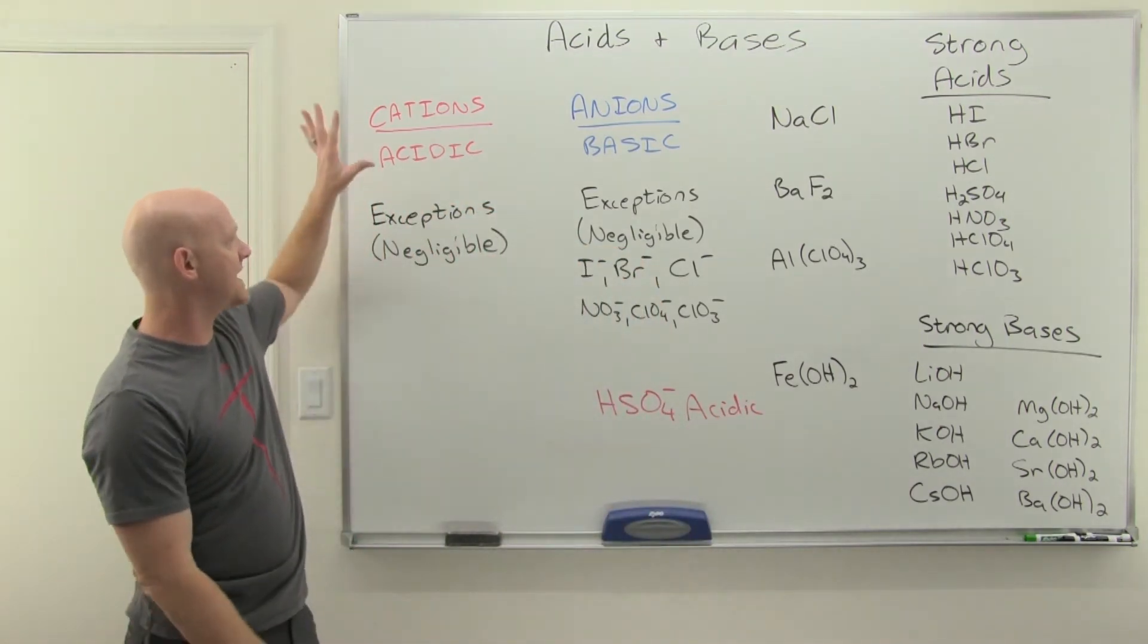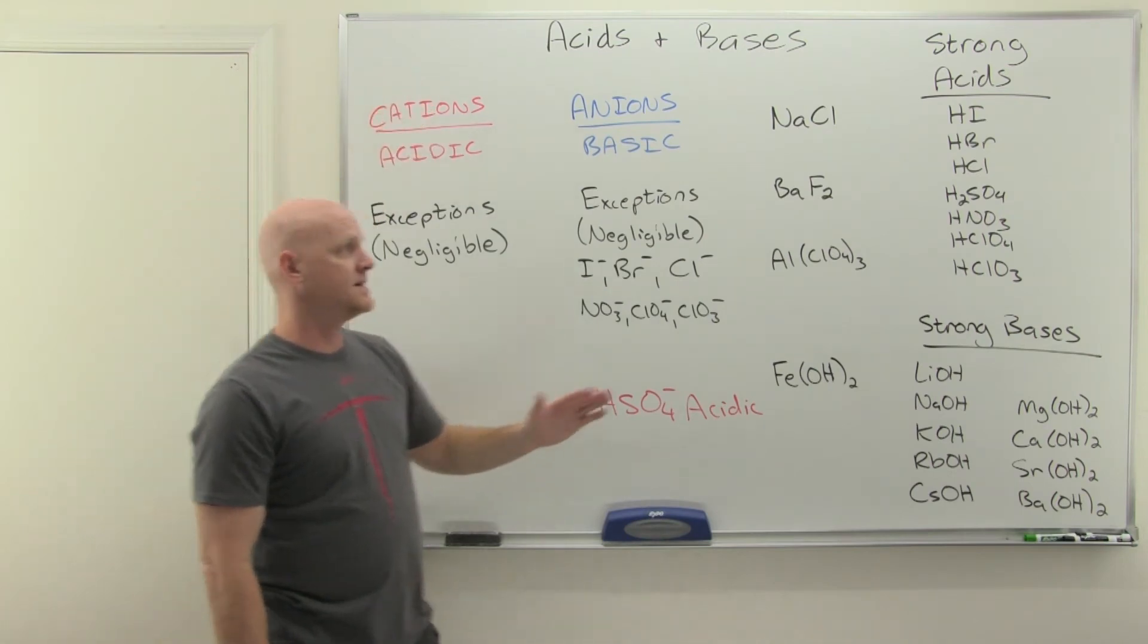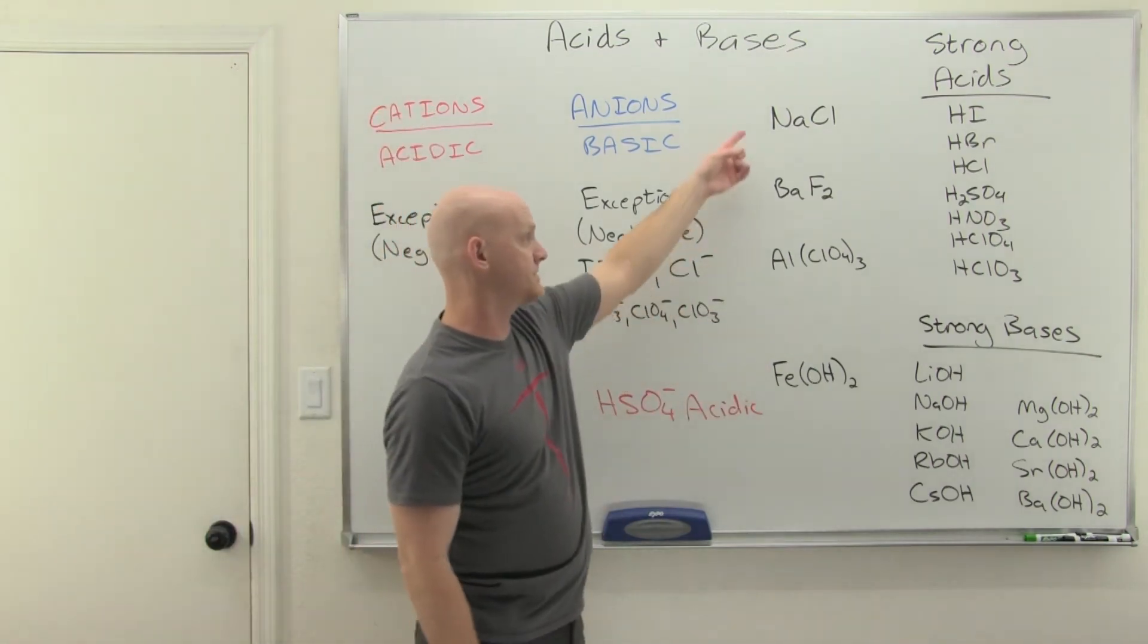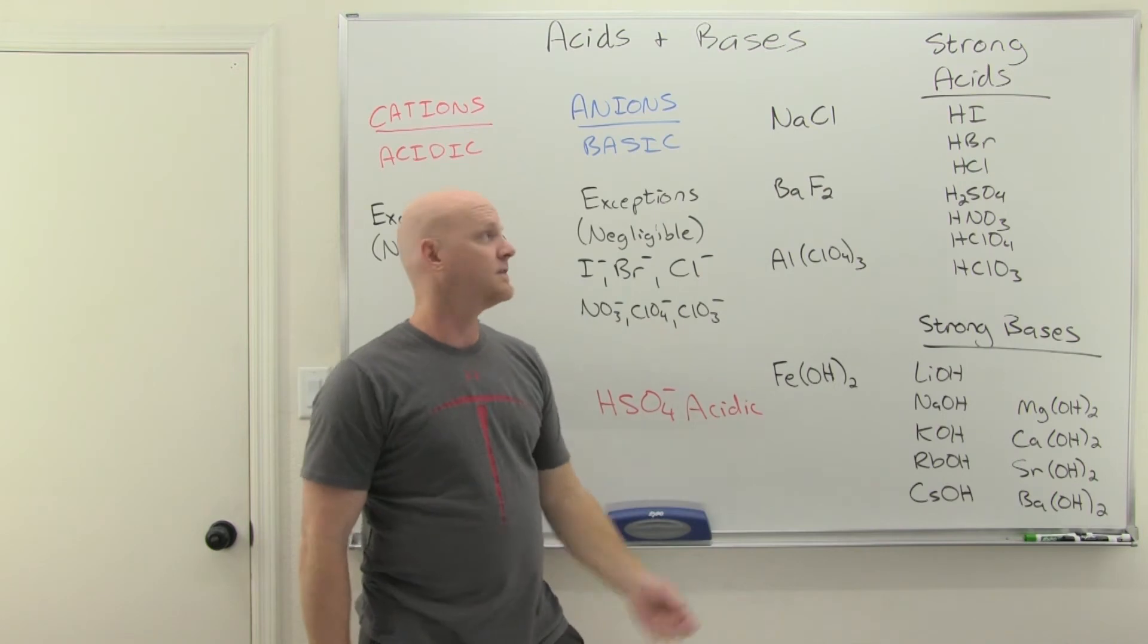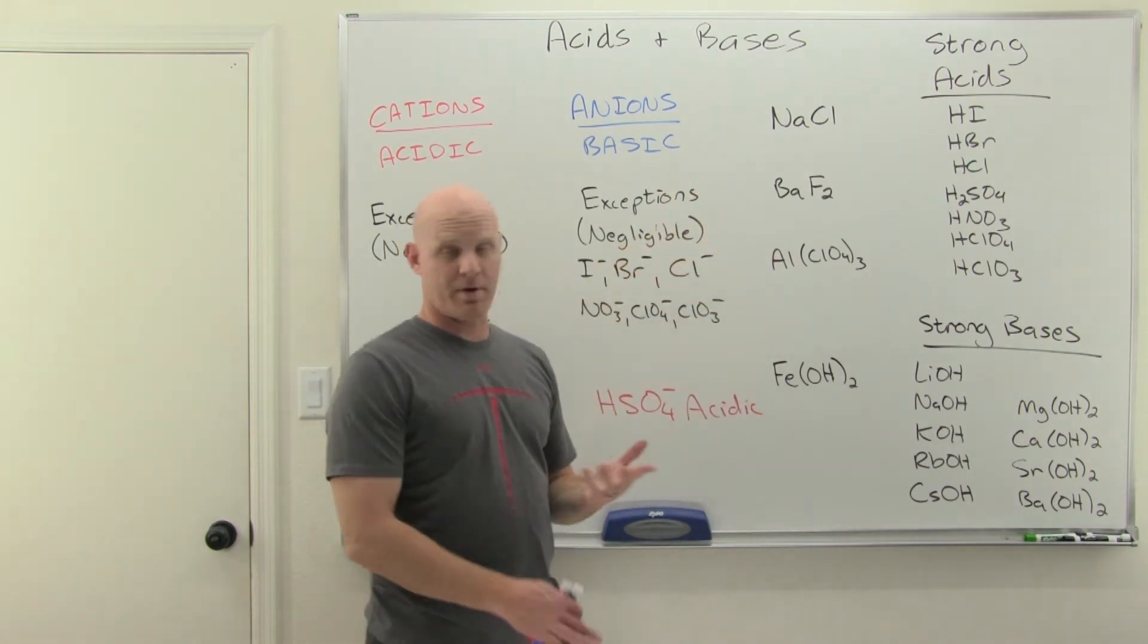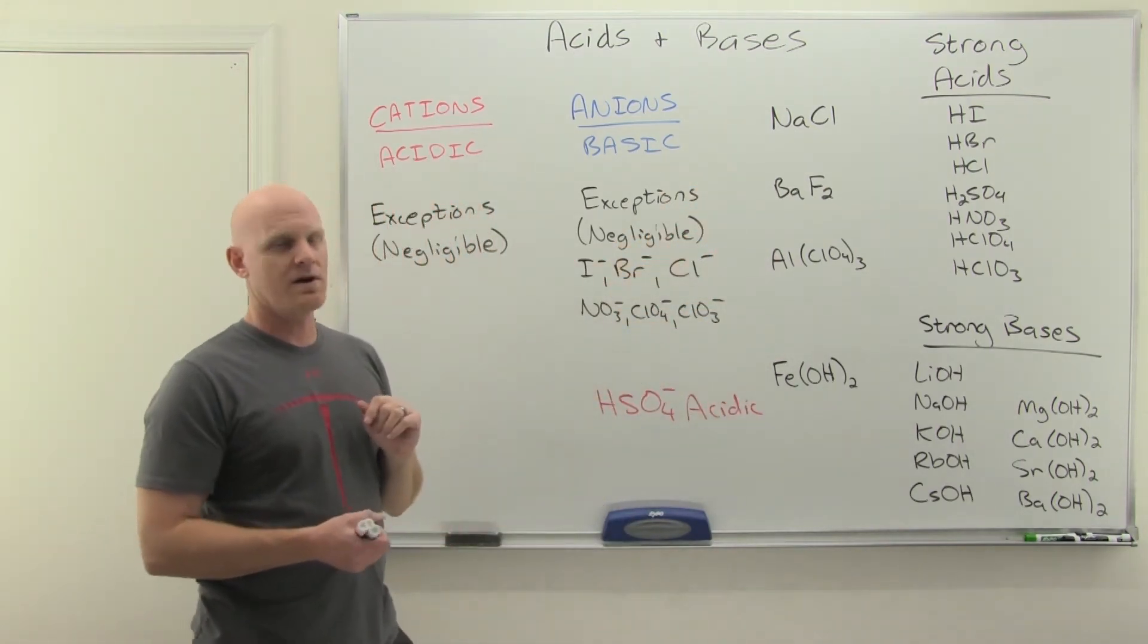What about the cations? Most cations are acidic. If I don't know anything else about a cation, they're probably acids. Sodium, barium, aluminum, iron, they're probably acids, except we know who the exceptions are.